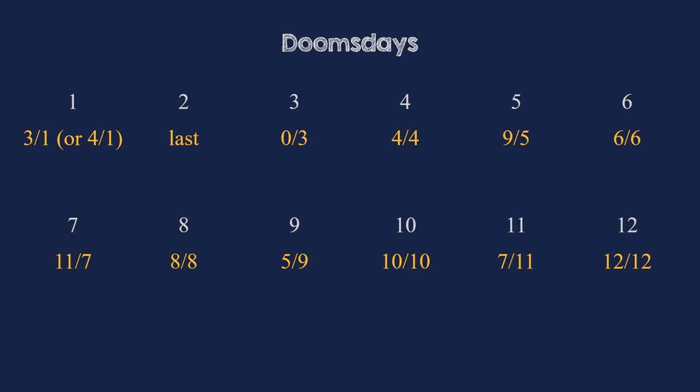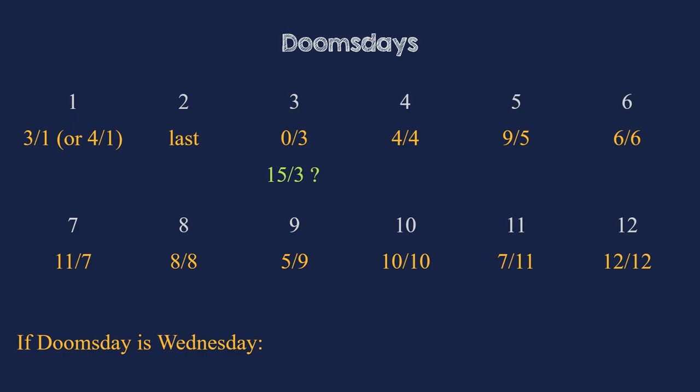Let's look at an example. If we knew that the yellow doomsday cluster is, say, a Wednesday in the year we are interested in, and we want to know what the 10th of December is, then we look for the nearest doomsday, which is the 12th of December. So our day is two days earlier, and therefore must be a Monday. And if we want to find the weekday of the 15th of March, the nearest doomsday is the 0th of March. That's a difference of 15 days, which is two full weeks plus one day later. Therefore, it must be Thursday.